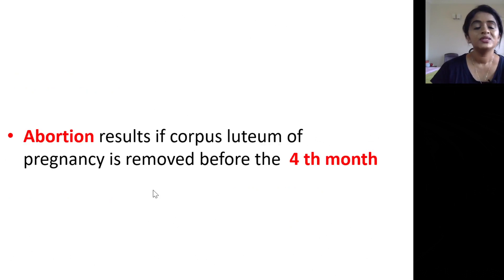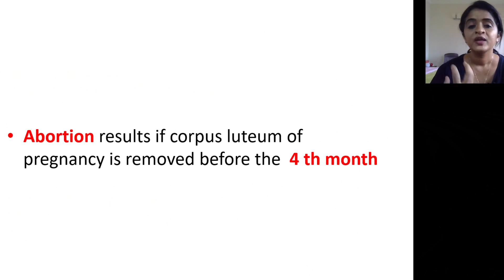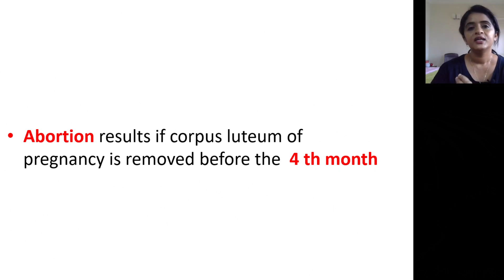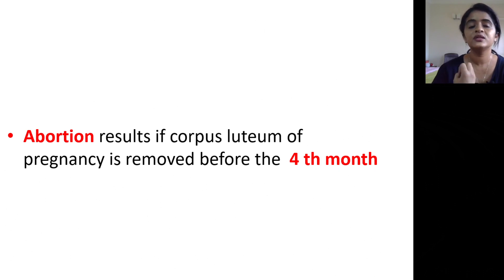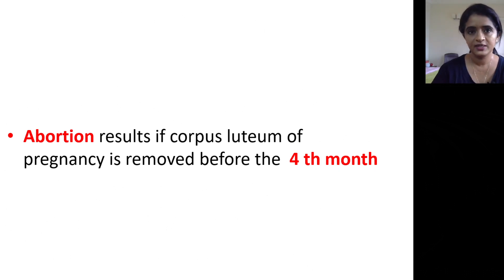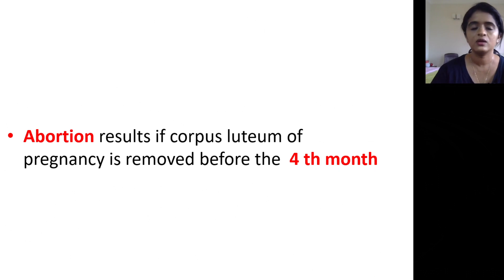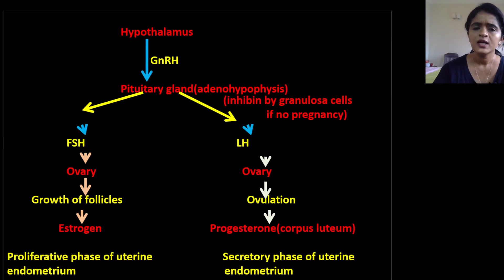If you want to induce abortion and you remove the corpus luteum of pregnancy before the fourth month, it will result in abortion, because removing the corpus luteum eliminates the source of progesterone essential for maintaining pregnancy. After four months, the placenta takes over progesterone secretion from the corpus luteum. So the corpus luteum is needed until the fourth month, and removing it before that point causes abortion.